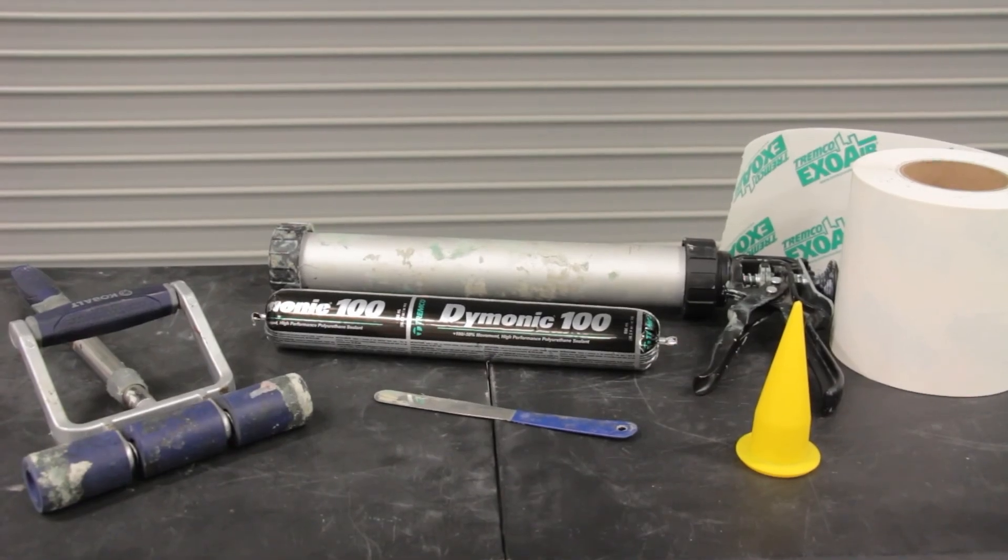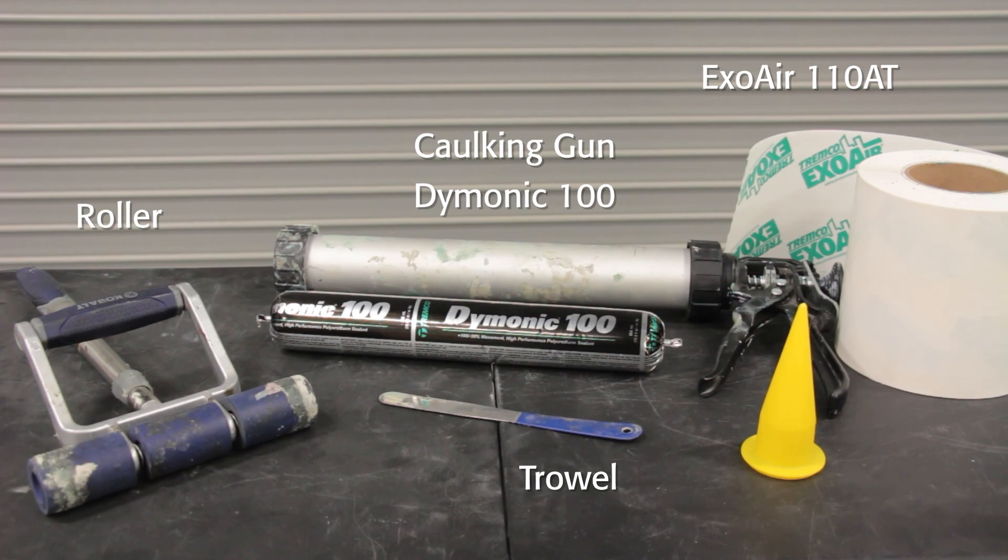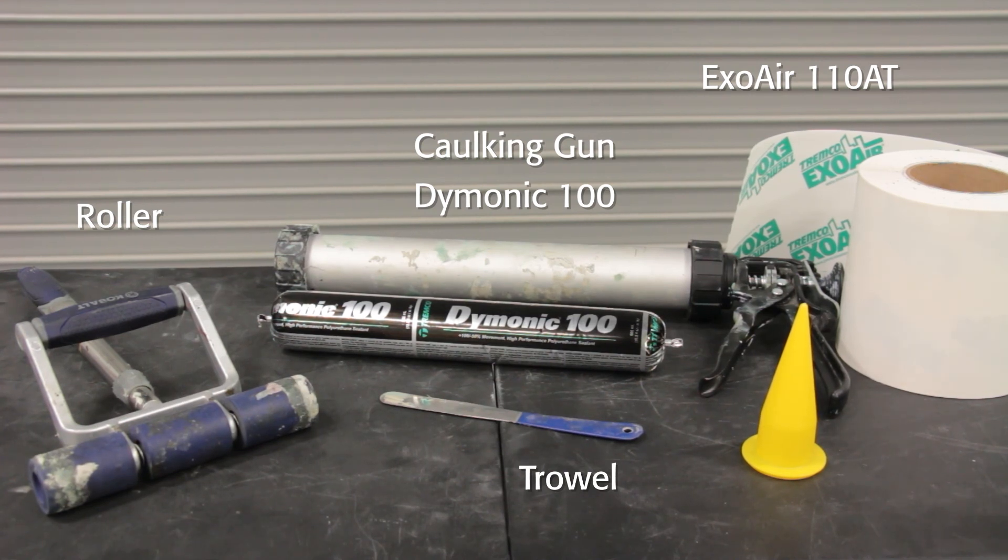To apply the ExoAir 110AT Peel and Stick at the rough openings, you will need the rolls of ExoAir 110AT in the appropriate width, a caulking gun, Dymonic 100 urethane sealant, a small trowel, and a roller.